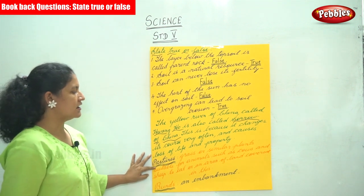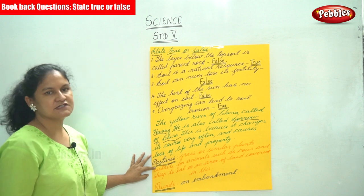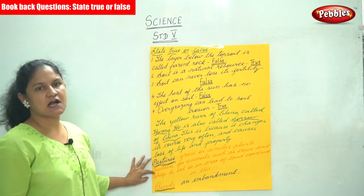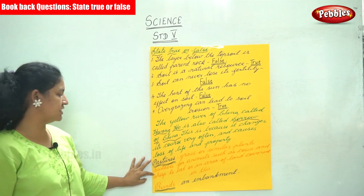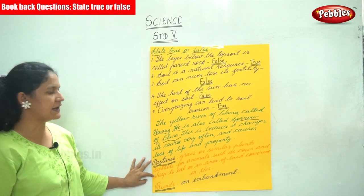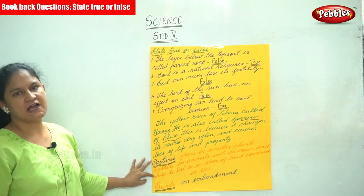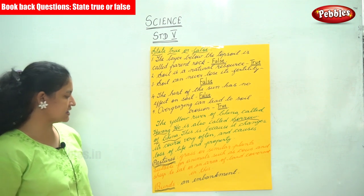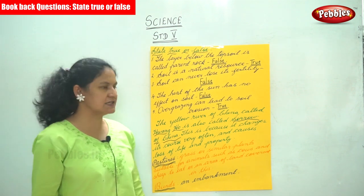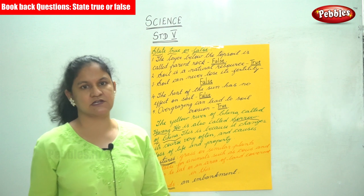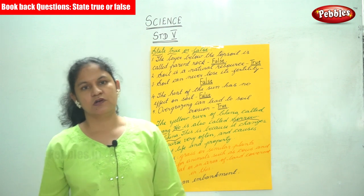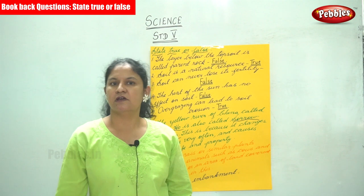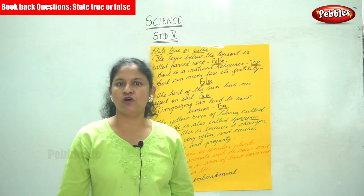Pastures are grass or similar plants suitable for animals such as cows and sheep to eat, or an area of land covered in this. Bunds are an embankment. This is the exercise that has been done for today.